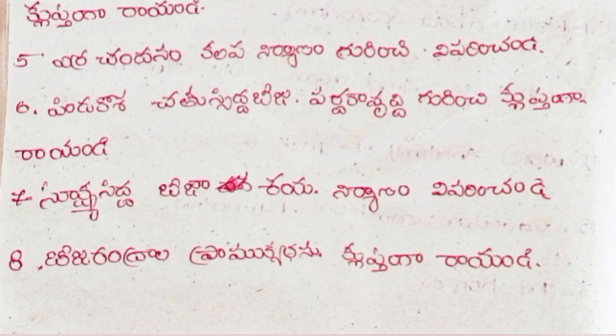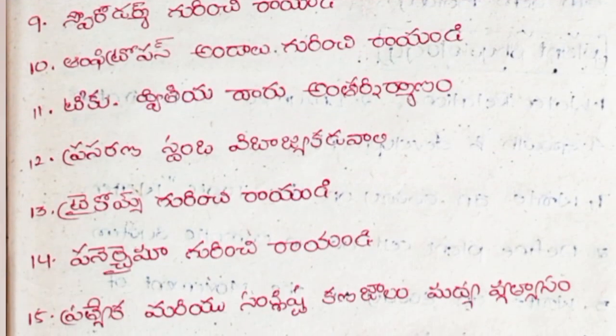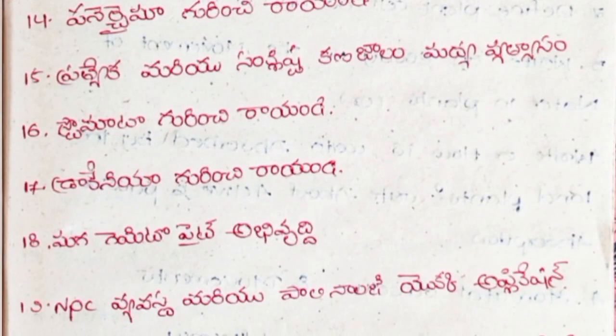7. Sukshmasiddha Bijashaya Nirmanam Gurinchi Viverencha'ndi. 8. Bijarandrala Pramukhya Thunu Kriptanga Viverencha'ndi. 9. Sporoderma Gurinchi Rayandi. 10. Amphitropas Andal Gurinchi Rayandi. 11. Tiku Dvitiya Daru Antar Nirmanam. 12. Prasarana Stambha Vibhajja Kadavali. 13. Trichomes Gurinchi Rayandi. 14. Parenchyma Gurinchi Rayandi. 15. Pratiyaka Mariyu Sanklishta Karnajalam Madhya Vyathyasandi. 16. Stomata Gurinchi Rayandi.